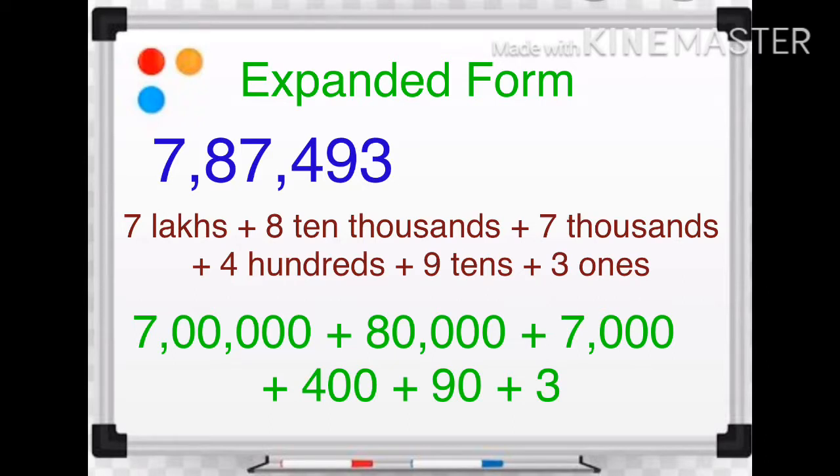As you can see here, 7 is at the place of thousands, so we can write 7,000. 4 is at the place of hundreds, so we can write 400. 9 tens, so we can write 90. 3 ones, so we can write 3.